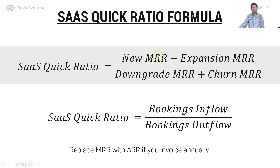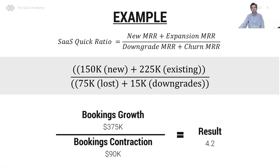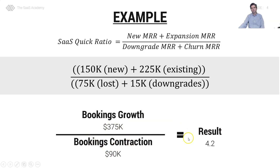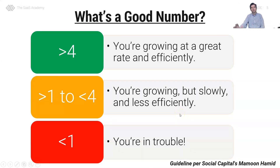If you live in the ARR world, you can simply replace MRR with ARR in this formula. Let's look at an example. Assume we booked 150k of new ARR/MRR plus 225k of expansion, but we lost 75k to churn and 15k to downgrades. In the numerator we have bookings growth of 375k for the latest month, and bookings contraction of 90k, resulting in a SaaS quick ratio of 4.2.